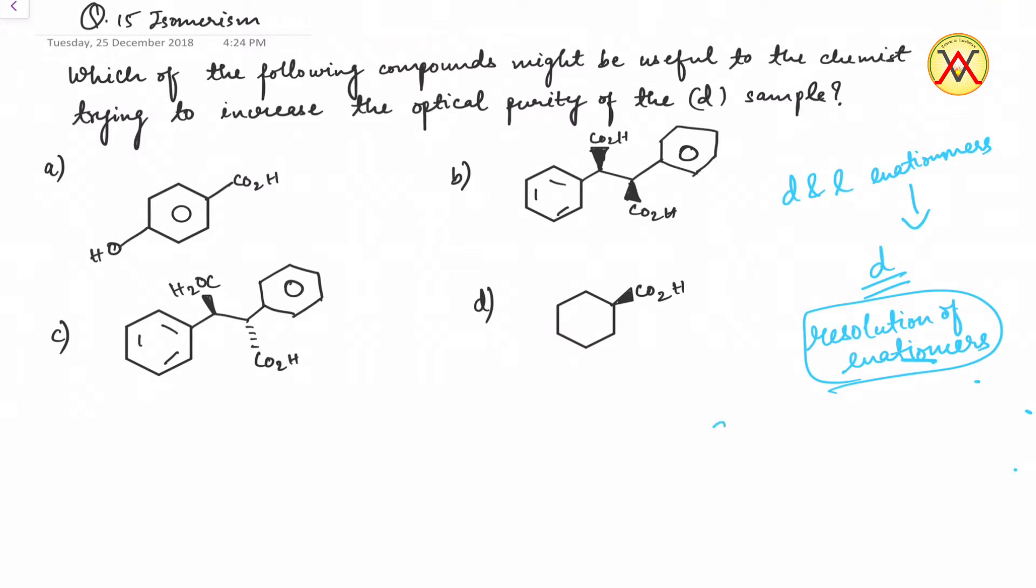For this, we need an optically pure compound. Let's suppose we take a D compound which will react with the mixture which contains both D and L enantiomers. When this optically pure compound reacts with the mixture, it will form a compound which has two chiral centers and their configuration would be DD and DL.